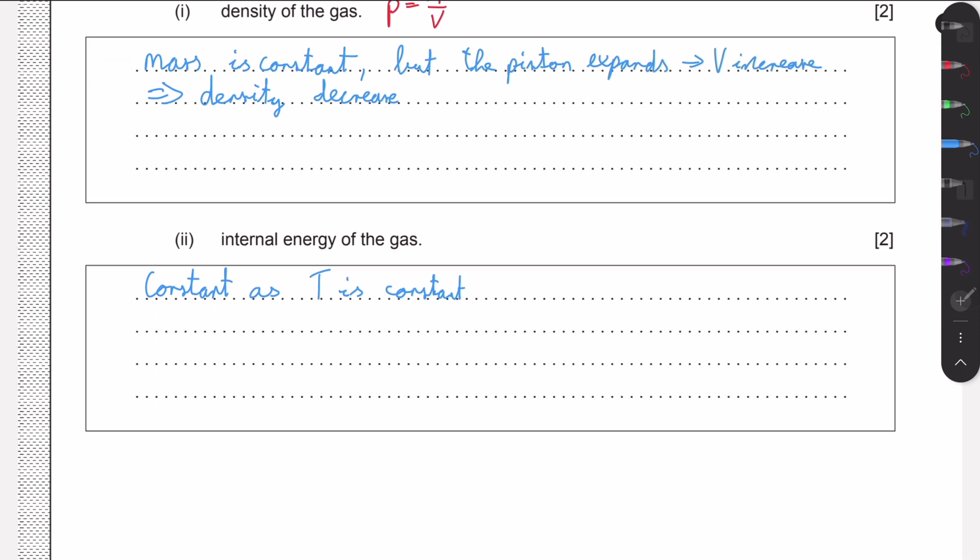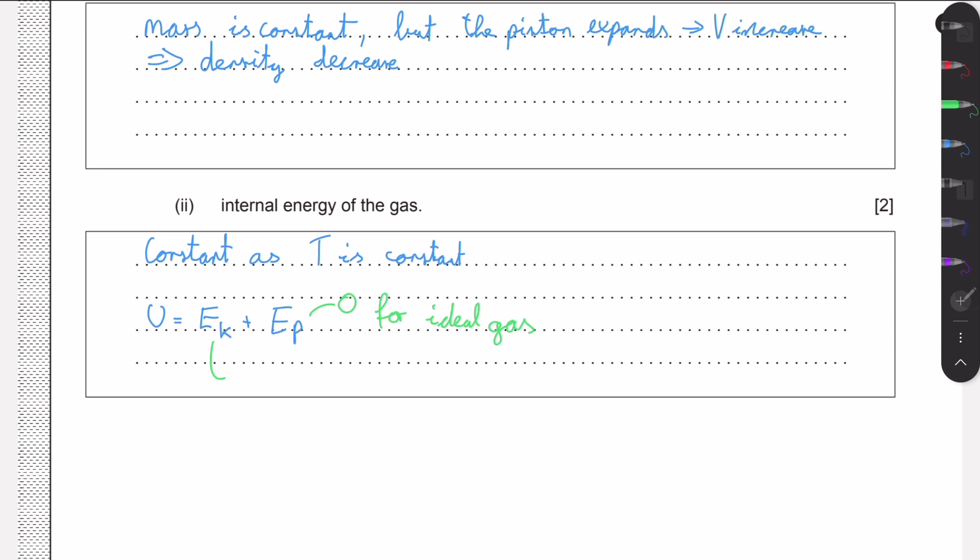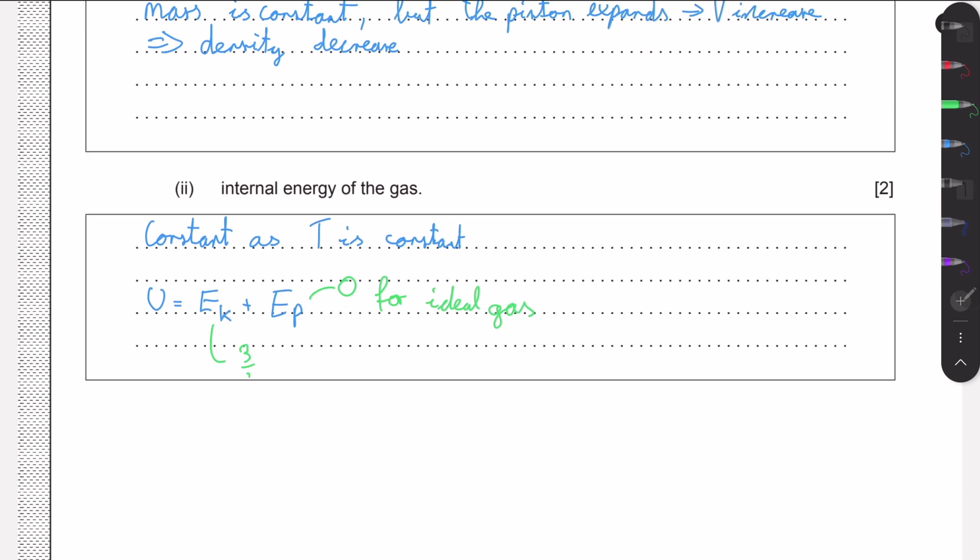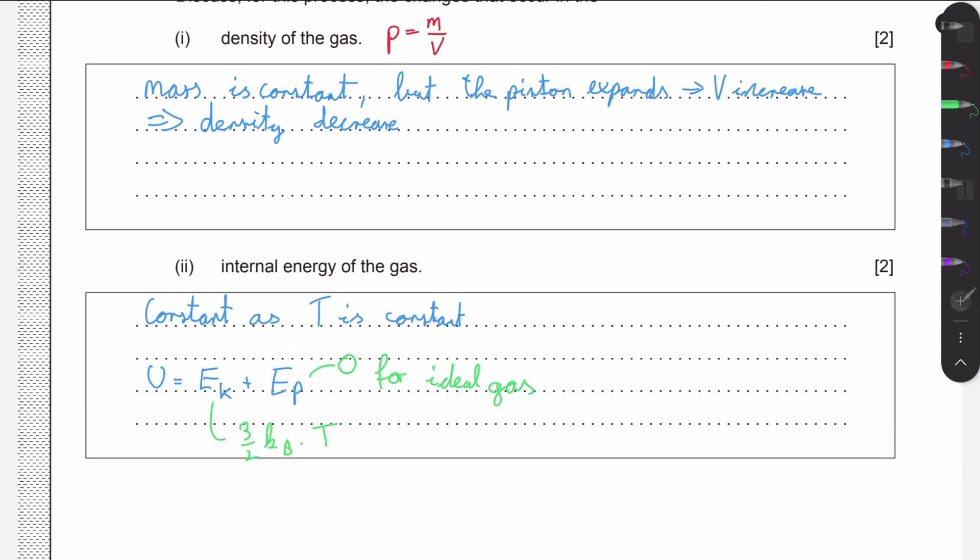U equals E kinetic plus E potential of the particles. But we know that E potential is zero for ideal gases, and we also know that E kinetic from the formula is just 3/2 times the Boltzmann constant times the temperature. But our temperature is constant, so the kinetic energy also doesn't change, and therefore our internal energy remains constant.